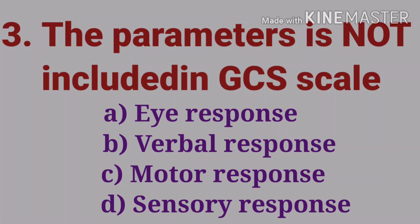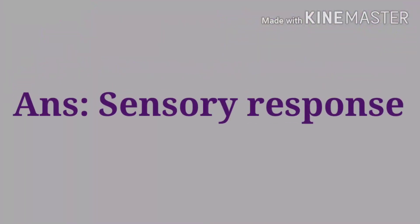The third question: the parameter not included in the Glasgow Coma Scale — options are eye response, verbal response, motor response, and sensory response. The answer is sensory response. The Glasgow Coma Scale includes eye response, motor response, and verbal response.